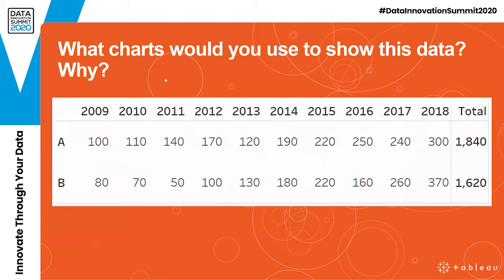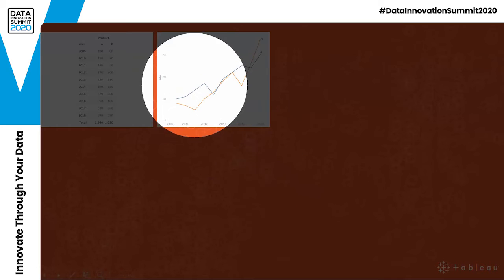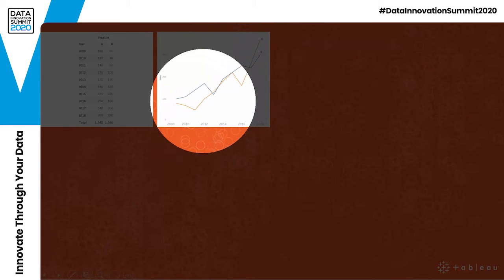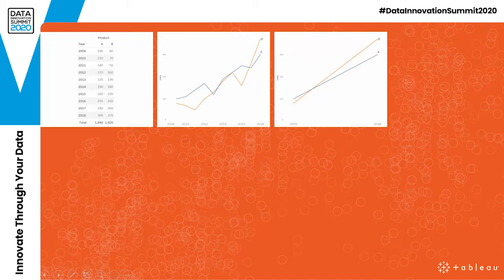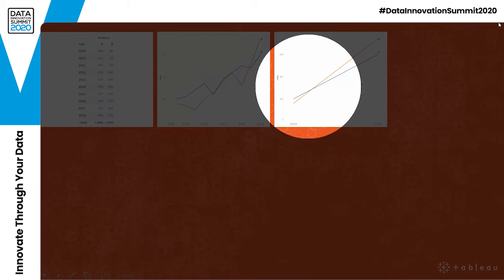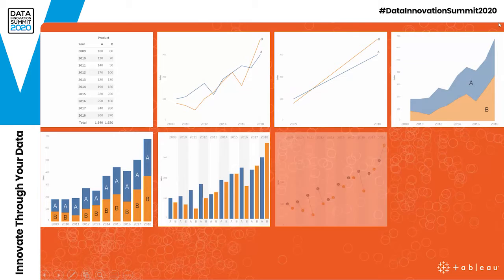Your job as chart designers is to choose the right chart to answer those questions. Here's an example: ten years of fictional sales for two products. How would you visualize this data? A line chart? A bar chart? Both are perfectly valid. But even a line chart is riddled with choices — breaking the two products apart, or summing them into one line. Or you could show a slope chart, which hides the middle and just shows the start and end of the data set, showing growth over a time period and comparing values more clearly than the line chart.